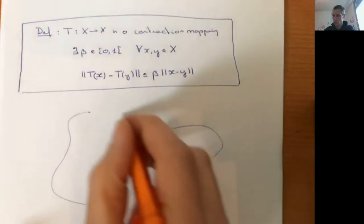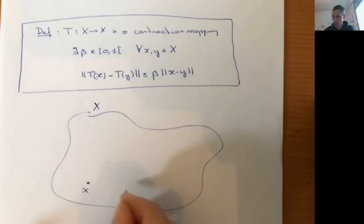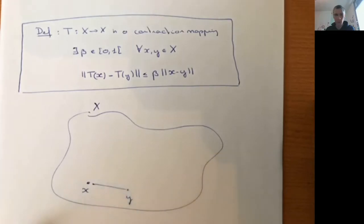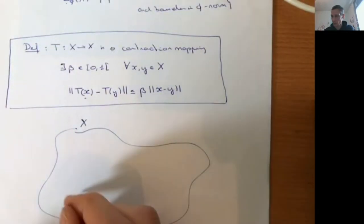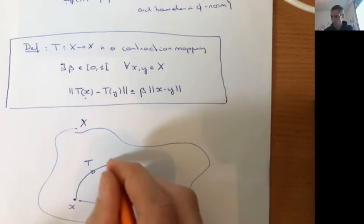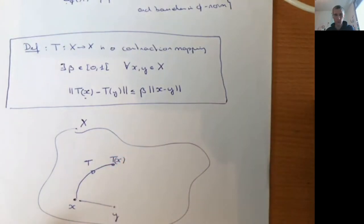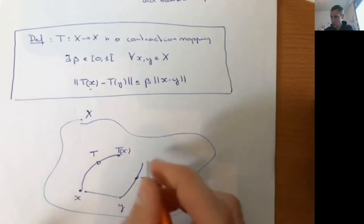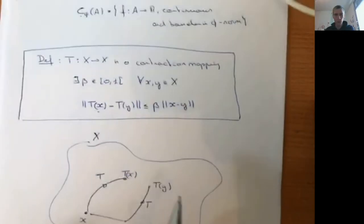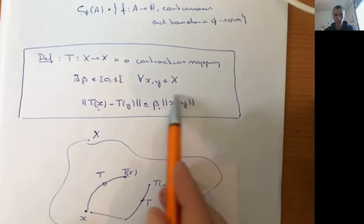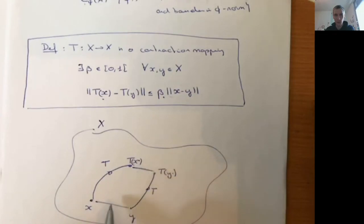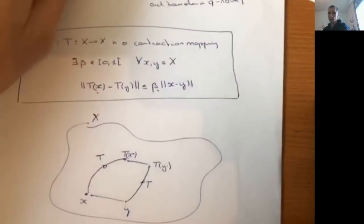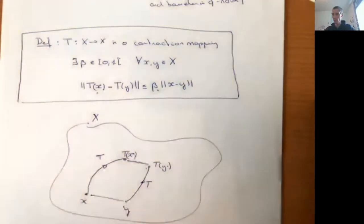Let's look at the intuition. In my vector space X, I have an element x and an element y with some distance between them. The mapping T takes x to Tx and y to Ty, both inside the set. Because beta is smaller than 1, the distance between Tx and Ty must be strictly smaller than the distance between x and y. So if you take two elements and look at their images under T, they come closer together.